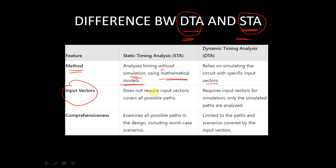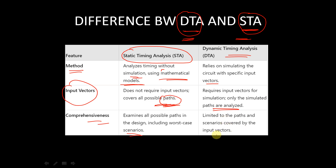Regarding input vectors: STA does not require input vectors at all, but it covers all possible paths. Dynamic Timing Analysis, on the other hand, requires input vectors for simulation and only the simulated paths are analyzed. In terms of comprehensiveness, STA examines all possible paths in the design including worst-case scenarios, while DTA is limited to the paths and scenarios covered by the input vectors.